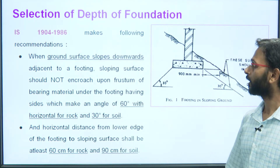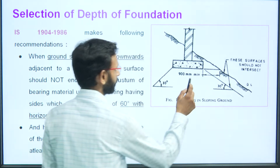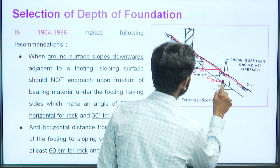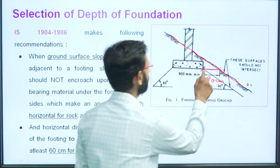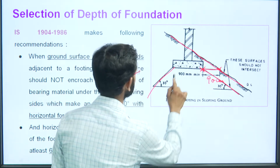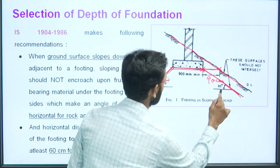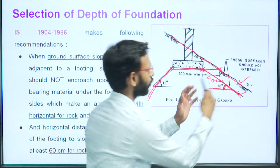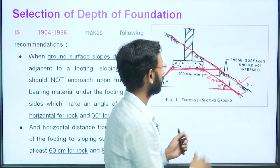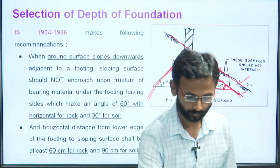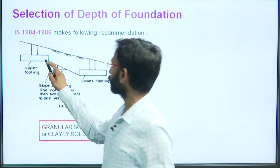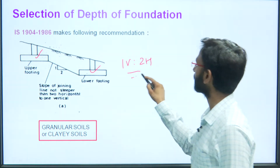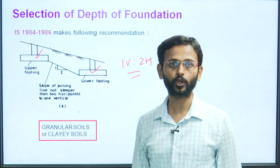Another IS code recommendation: if the ground is sloping, the base of the footing should have at least 90 centimeters of horizontal distance to the slope. Also, the angle formed by the frustum of the base should be 30 degrees, and the two surfaces (footing base and slope) should not intersect. For two adjacent footings at different depths, the slope between them should not be steeper than 1 vertical to 2 horizontal.